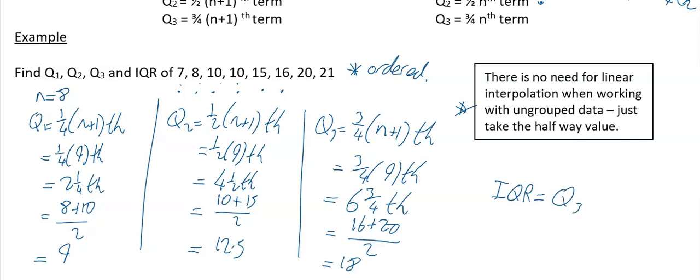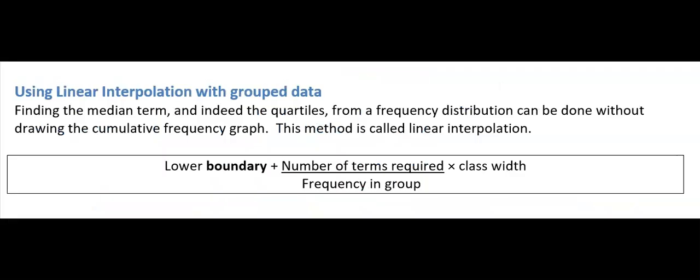The interquartile range (IQR) is the upper quartile minus the lower quartile. It represents the middle 50% of the distribution — extremities exist at either end, but the middle 50% gives a good reflection of what's going on. So IQR = 18 − 9 = 9.